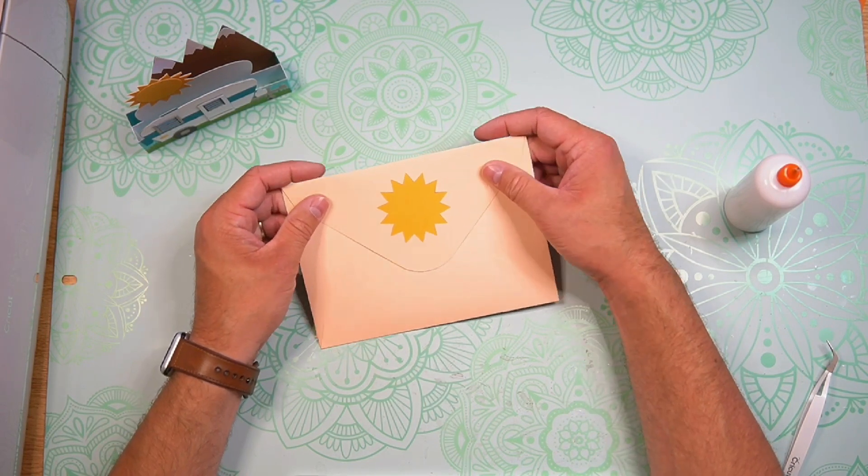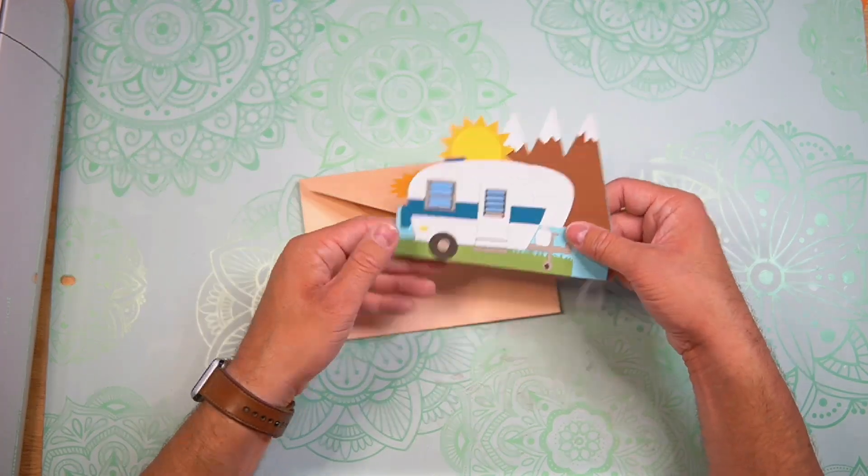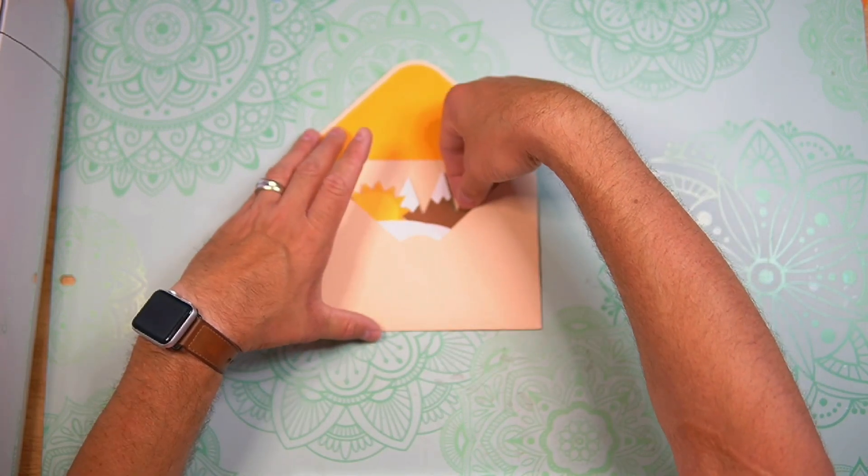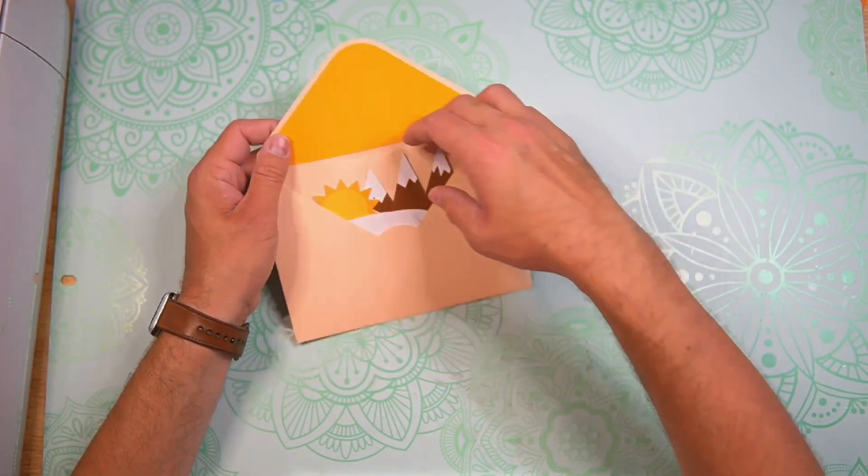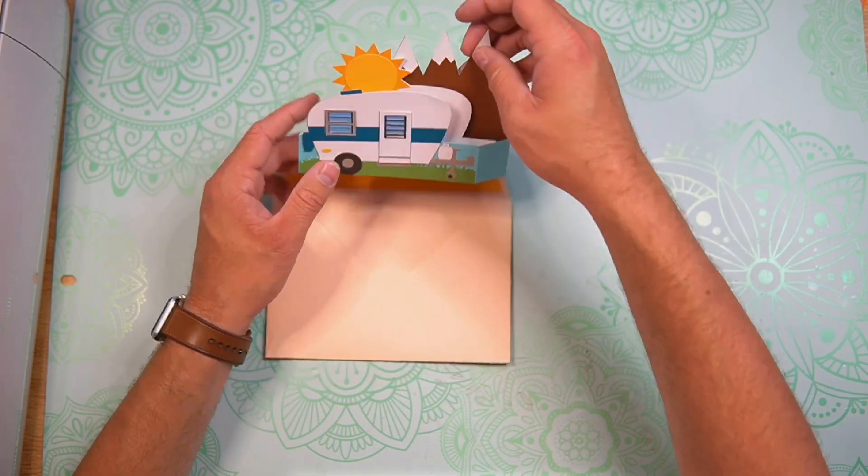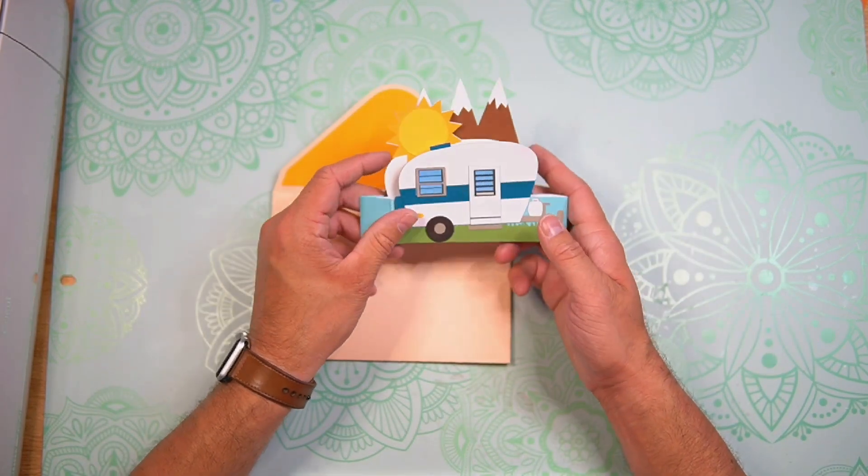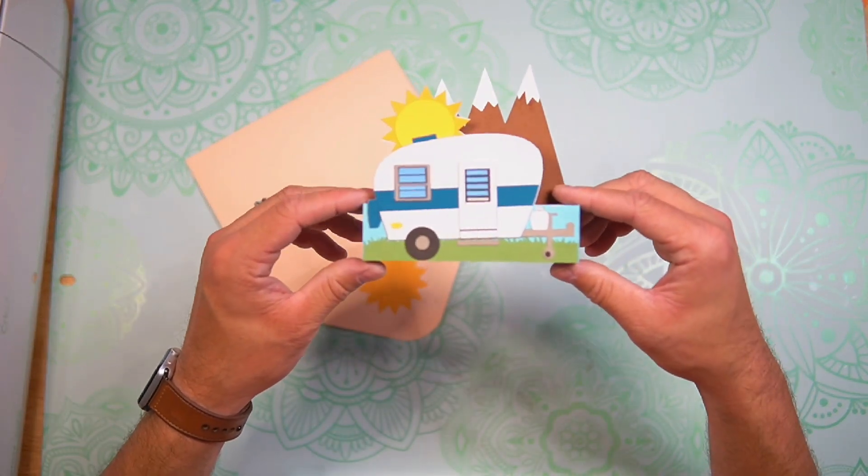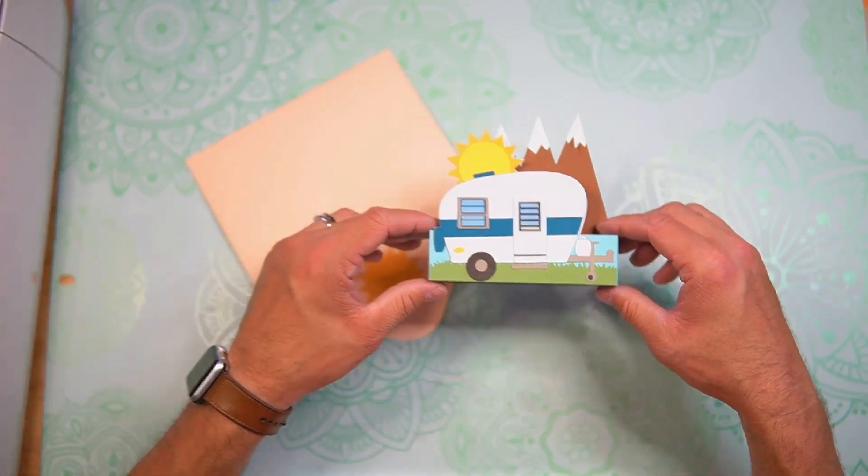Cute little sun there on the back. Go ahead and take your card and fold it flat. And then it fits in there nicely. The recipient takes it out, pops it up. And there is our cute little camper box card.